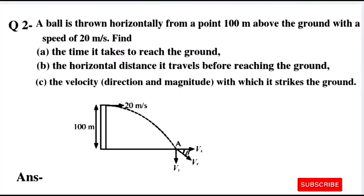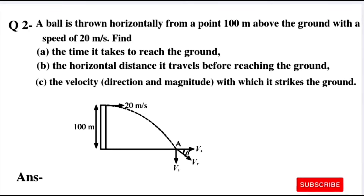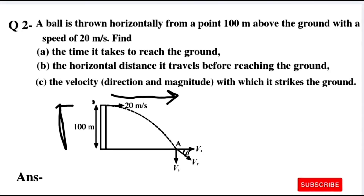Question number 2: A ball is thrown horizontally from a point 100 meters above the ground with a speed of 20 meters per second. Find: A) the time it takes to reach the ground, B) the horizontal distance it travels before reaching the ground, and C) the velocity — direction and magnitude — with which it strikes the ground. We will find all three answers.